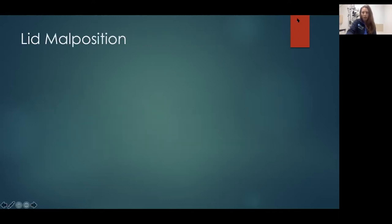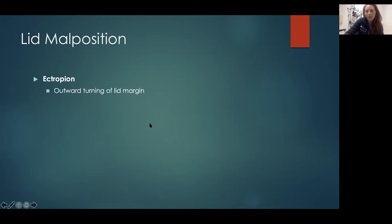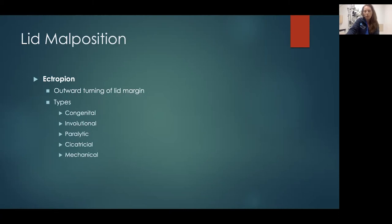The next topic is lid malposition — ectropion. This is outward turning of the eyelid margin. There are a couple of different types: congenital ectropion in babies; involutional, which is age-related; paralytic, so if you have seventh nerve palsy; cicatricial, if they've had previous surgeries causing scarring that pulled the eyelid down out of position; and mechanical, if they have eyelid swelling or something like that.